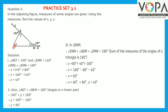Now, in triangle ENM, the sum of the measures of the angles is 180 degrees. So angle ENM plus angle NEM plus angle EMN equals 180 degrees. Substituting: X plus Y, which is 80 degrees, plus Z, which is 40 degrees, equals 180 degrees. Therefore, X equals 180 minus 80 minus 40, so X equals 60 degrees.